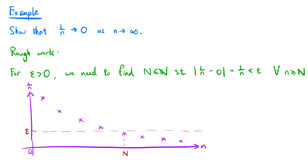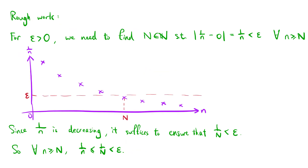We can draw a rough picture of how 1 over n behaves as n increases. Since 1 over n is decreasing, for any given epsilon, we can always find capital N such that 1 over N is less than epsilon, and for greater values of n, 1 over n will continue to be less than epsilon. So for all n greater than or equal to N, 1 over n is less than or equal to 1 over N, which is less than epsilon. This is what we want.